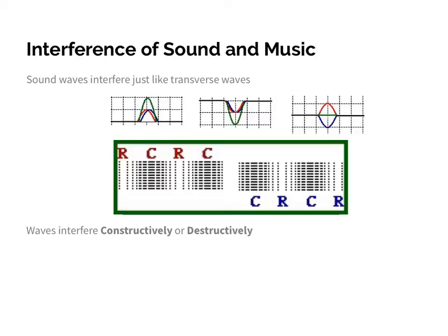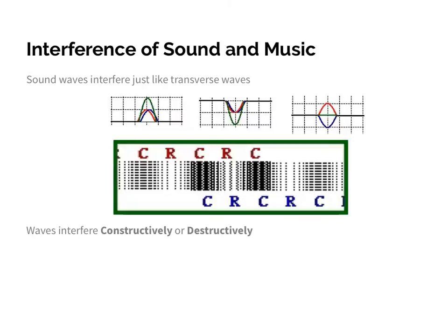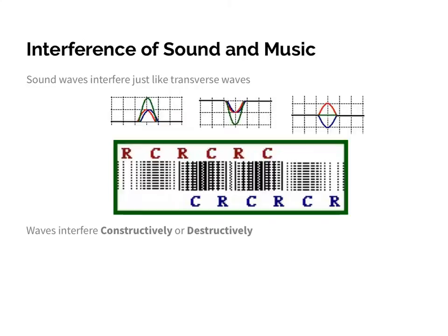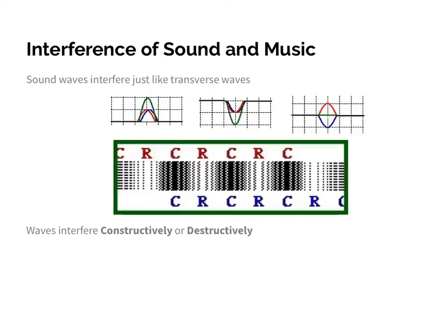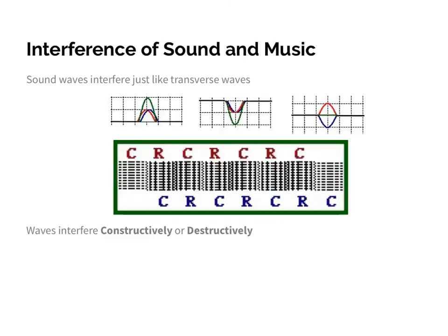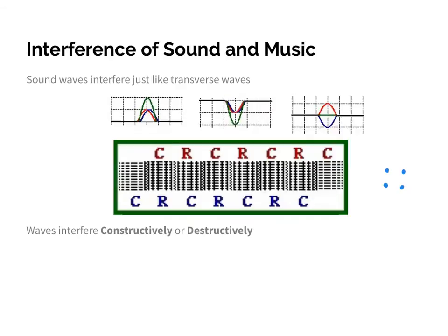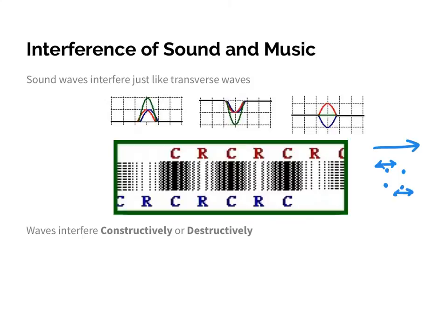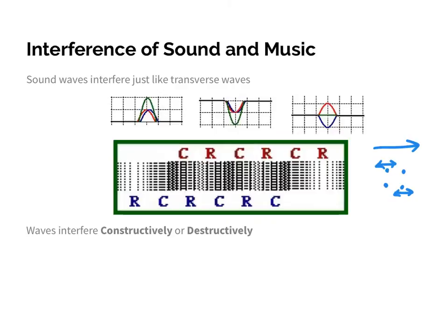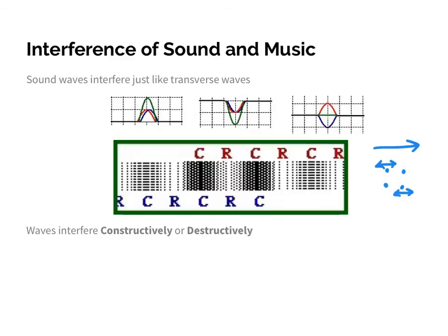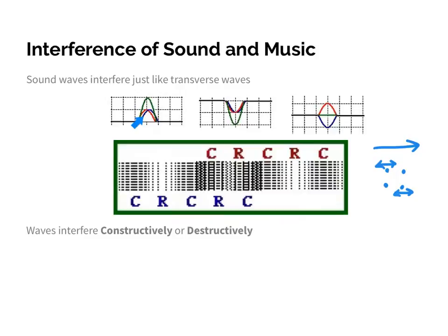Sound waves, because they are waves, can interfere constructively and destructively. Instead of crests and troughs, remember we have compressions and rarefactions. Compressions are the particles of the medium when they're very close together, and rarefactions are when they're spread out. If the wave is traveling from left to right, these particles vibrate back and forth within the medium. Sound waves can interfere constructively and destructively, just like regular transverse waves.